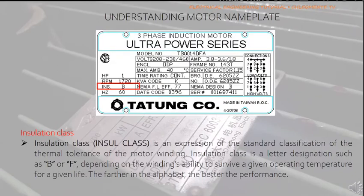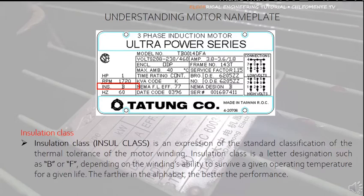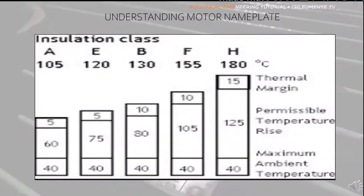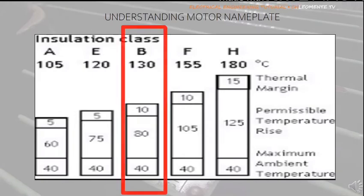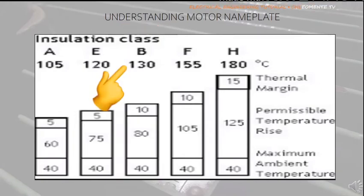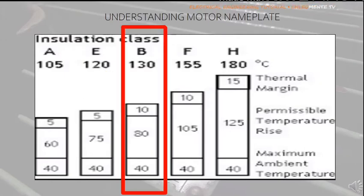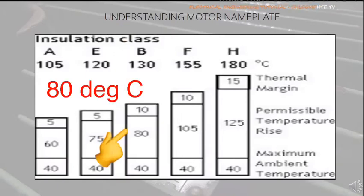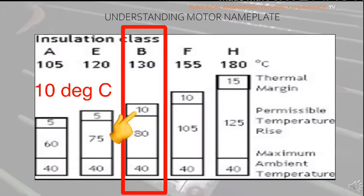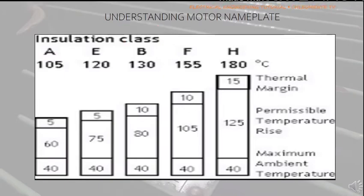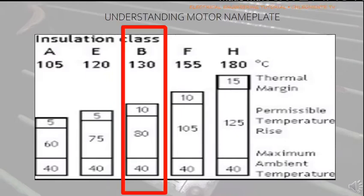Insulation Class, denoted by Insul Class, is an expression of the standard classification of the thermal tolerance of the motor winding. Each letter corresponds to the winding's ability to survive a given operating temperature. In this example, insulation class B means the winding of this 1 HP motor has a maximum of 130 degrees Celsius, with a maximum ambient temperature of 40°C, an 80°C permissible temperature rise, and a thermal margin of 10°C. Operating the motor 80°C above its maximum ambient temperature will degrade the winding insulation and in the long run cause motor winding failure.